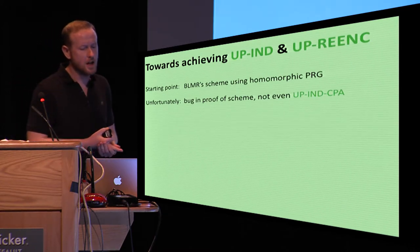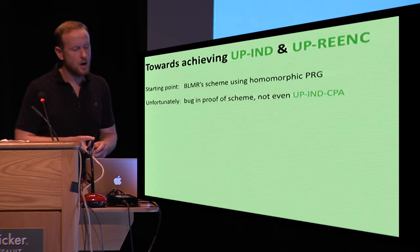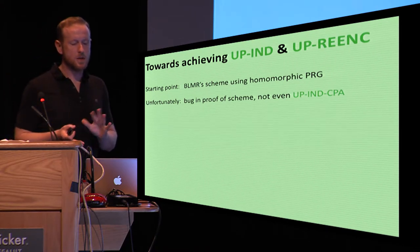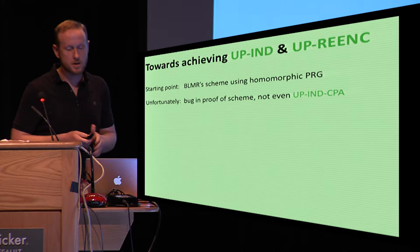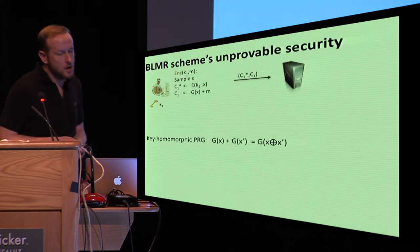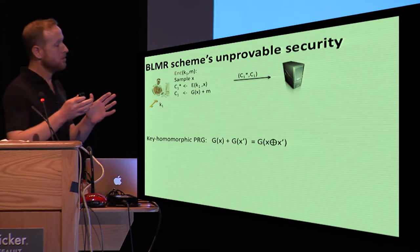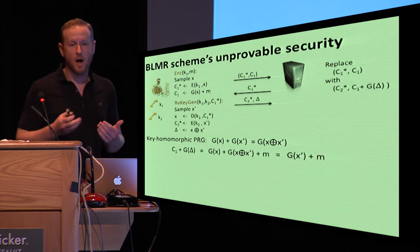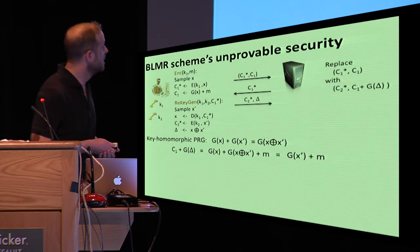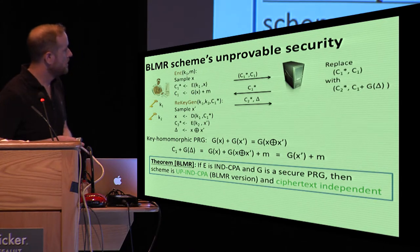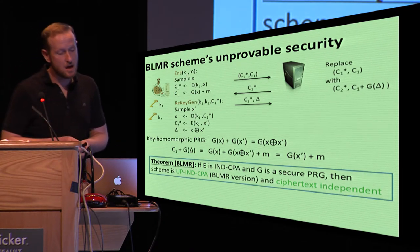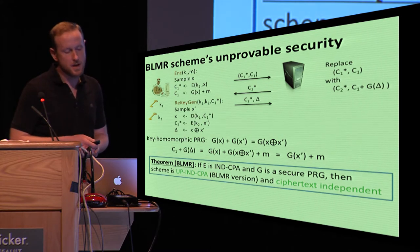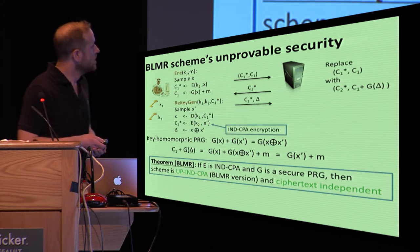So the question is, can we then achieve both UPIND security as well as this UP re-encryption security? And the natural starting point for that is the BLMR scheme that uses this key homomorphic PRG. But as I mentioned briefly before, there's a bug in the proof and it turns out it's not even UPIND CPA. This turns out to be somewhat easy to fix, but technically it was kind of interesting understanding this bug. So let me go over it very quickly. Recall the BLMR scheme's unprovable, the BLMR scheme's secure scheme is using this KEM-DEM style thing with this key homomorphic PRG. And this allows updates by exploiting the homomorphism properties of the PRG. As they put in their paper, basically a theorem that, you know, a high level is saying that if E, the KEM-encryption is IND-CPA and G is a secure PRG, then the scheme meets this UPIND CPA security.